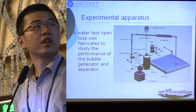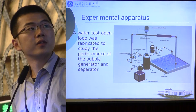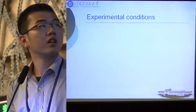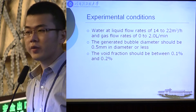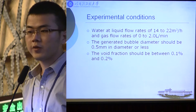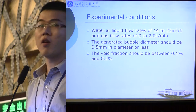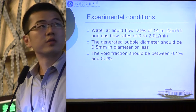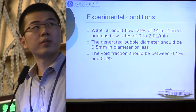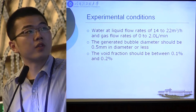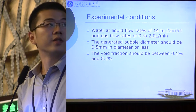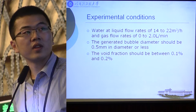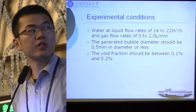We used an entry liquid tank to collect the fluid out of the separator. The water test loop was tested at a liquid flow rate of 14 to 22 cubic meters per hour and a gas flow rate of 0 to 2 liters per minute. The generated bubble diameter should be 0.5 millimeters or less, and the void fraction should be between 0.1% and 0.2%.